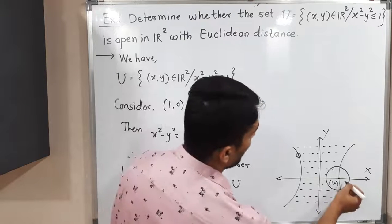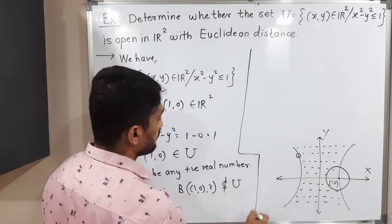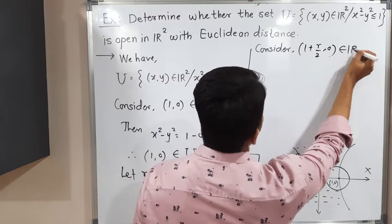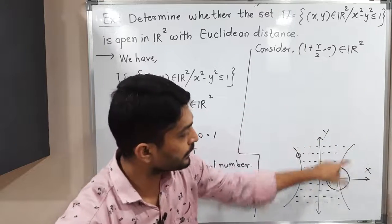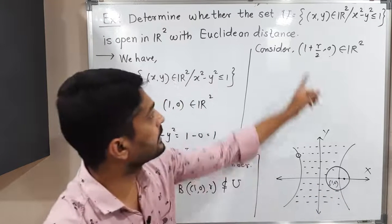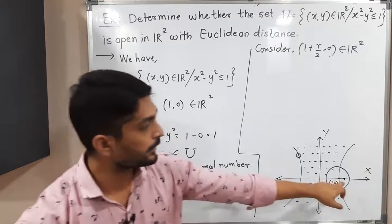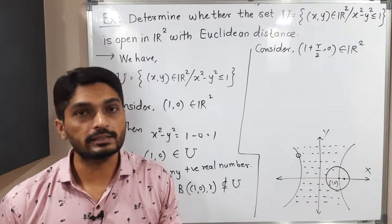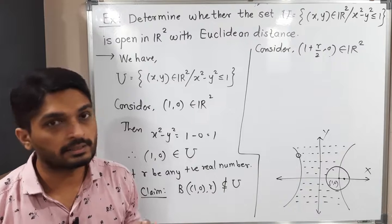We need to find one point in the ball that is not in U. In the diagram you can see there are many such points, but we must prove it mathematically. Consider the point (1 + R/2, 0) in R². This point has x-coordinate 1 + R/2, which is 1 plus half the radius, and y-coordinate 0, so it lies on the x-axis. We will prove this point lies in the ball by showing its distance from the center (1, 0) is less than R.